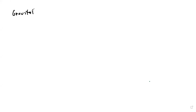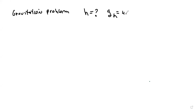Let's do a gravitation problem. We want to know at what height g of height is going to be 4.9 meters per second squared. So we want to know at what altitude over the Earth's surface the acceleration of gravity would be 4.9 meters per second squared.